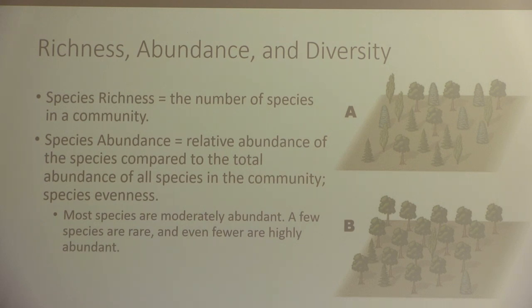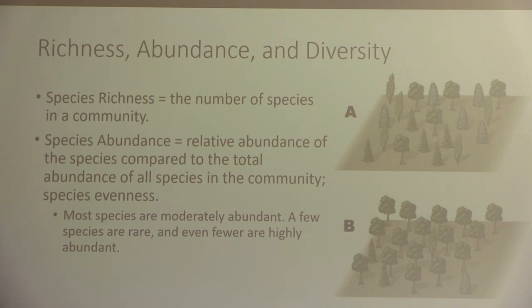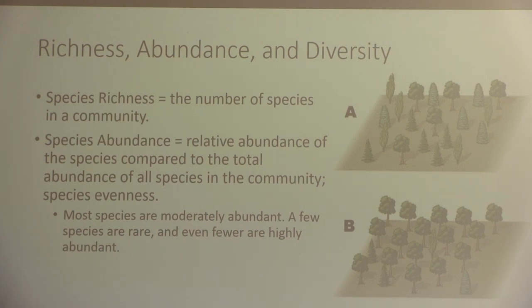Highly abundant organisms are really good at being the most competitive in a community. Going back to our past lecture about invasive mussels in the Great Lakes — those mussels have dominated their level of the community. The quagga mussels, for example, are out-competing even the zebra mussels, which were themselves invasive. So it really comes down to how many are highly abundant, how many are rare, and how many are moderately abundant.